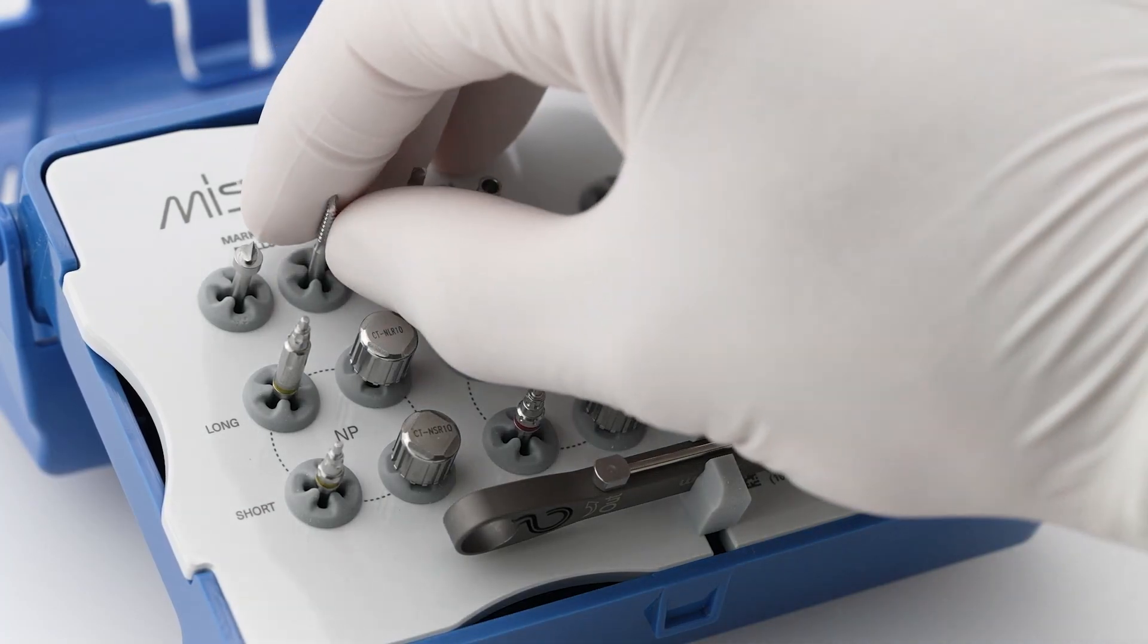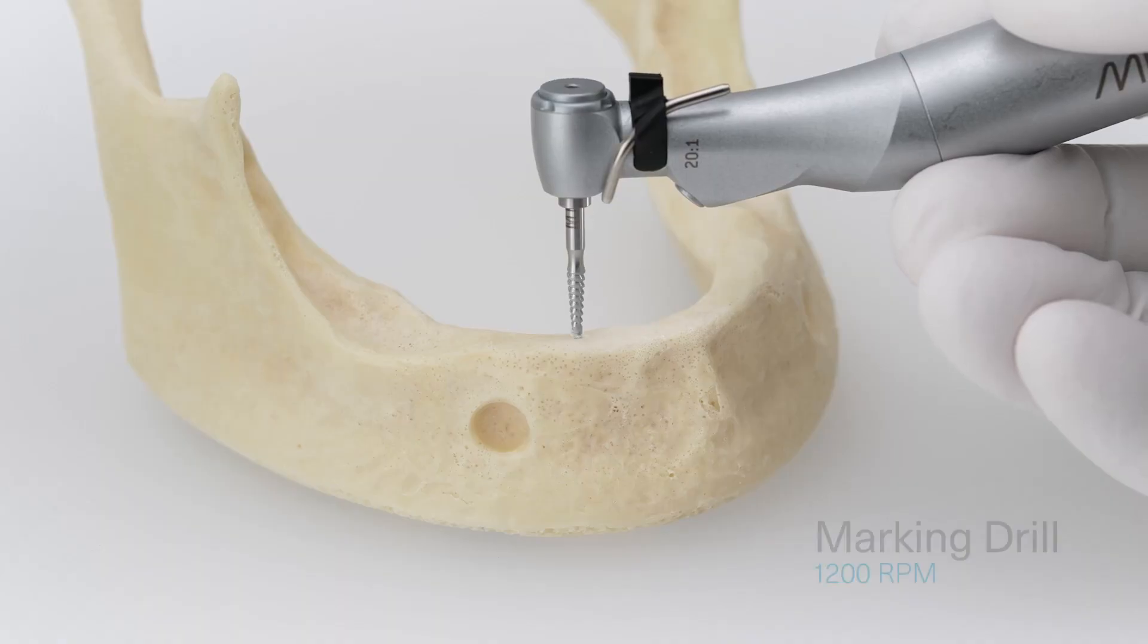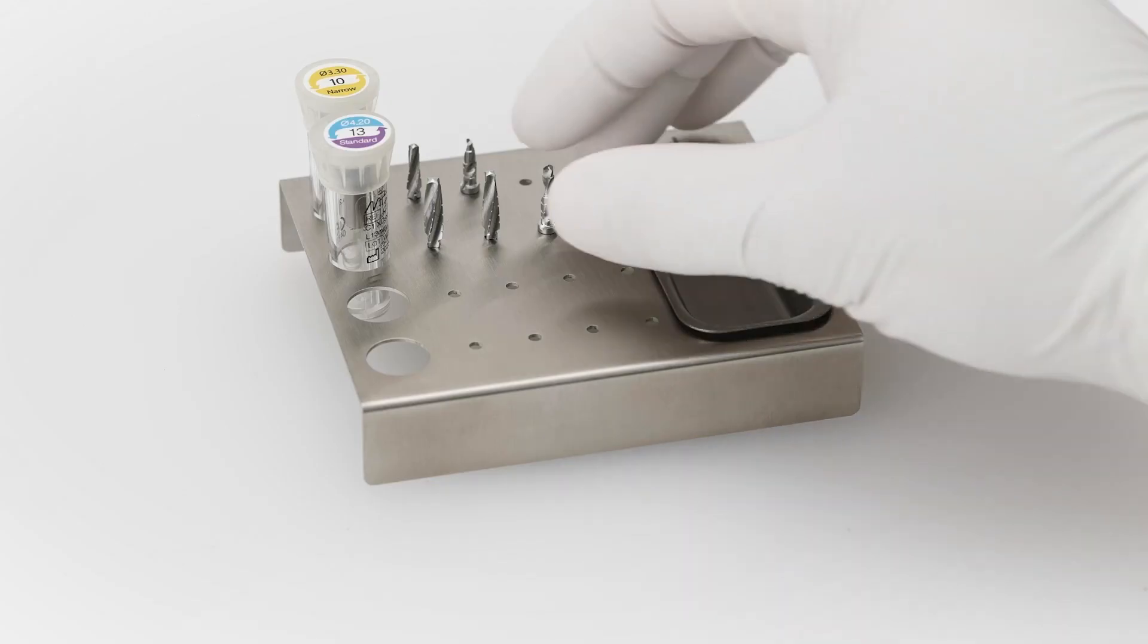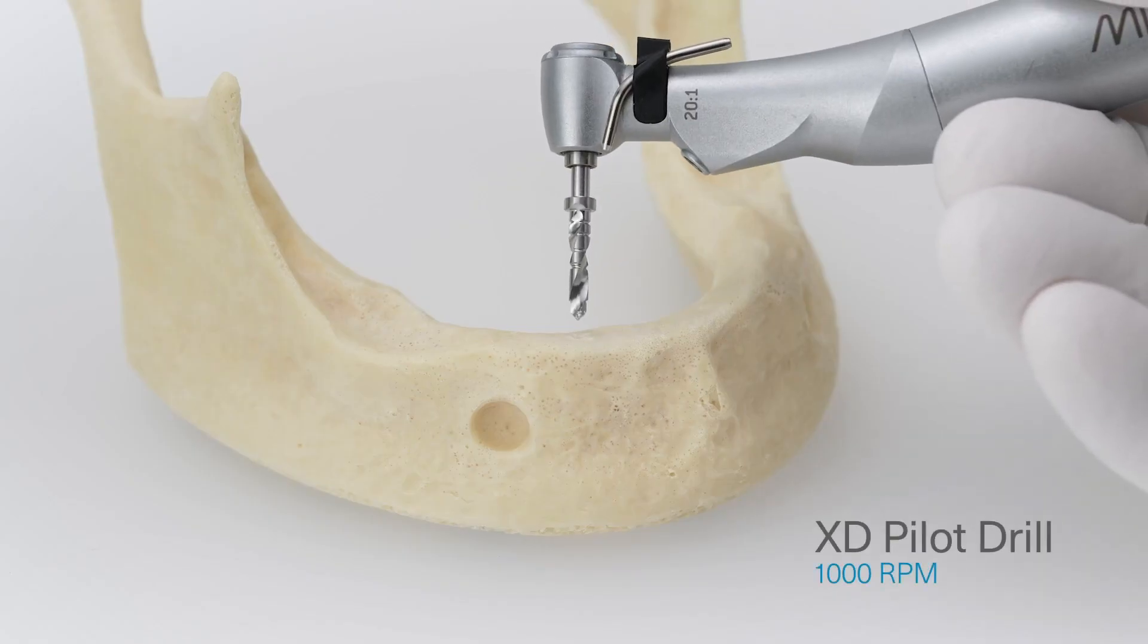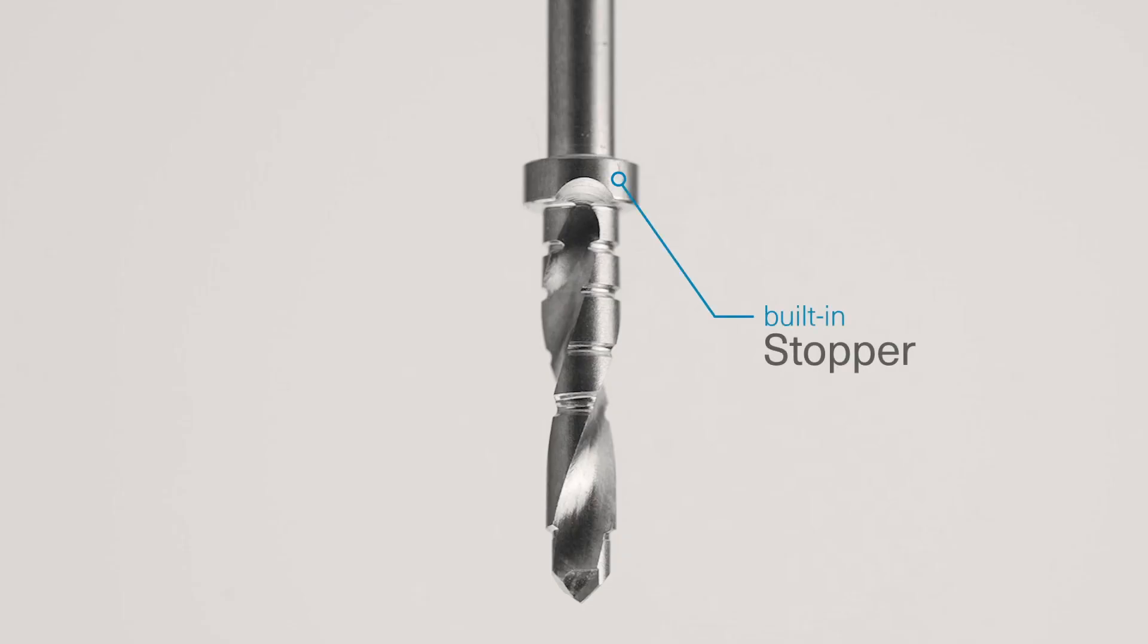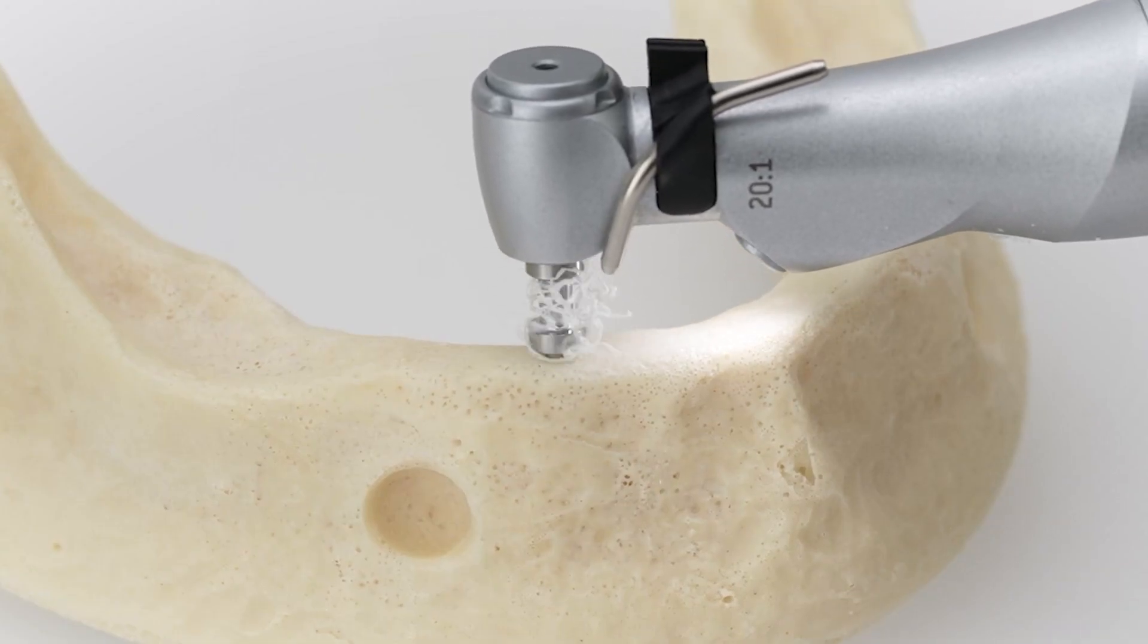Start the drilling sequence by using the marking drill from the XD placement set to indicate the positioning of the implant. After marking the correct drilling spot, continue with the XD pilot drill. The XD pilot drill features a built-in stopper and comes with a two millimeter diameter tip, allowing you to accurately determine the depth of the osteotomy.